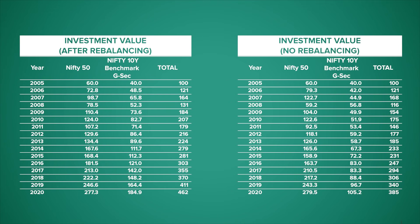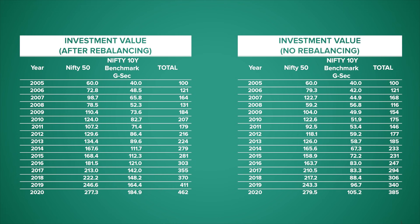This rebalancing needs to be done every year, and when done, our Rs. 100 would have grown to a healthy Rs. 462 by the end of 2020. What's important to note is that with rebalancing, our portfolio would have grown to Rs. 462, and without rebalancing, our portfolio would be a lot lower at just Rs. 385. That's a difference in returns of 1.3% per annum over 15 years, which is quite significant. Let's take a couple more minutes and figure out why the rebalanced portfolio has done so well compared to the non-rebalanced portfolio.